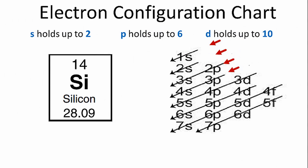For silicon, we have 14 electrons to work with. We'll use the chart on the right to help us write the notation. As we go down the first row, we go through the 1s orbital, and the 1s orbital can hold up to 2 electrons. So we'll put 2 electrons in that orbital.